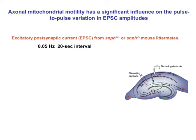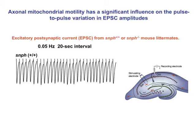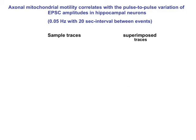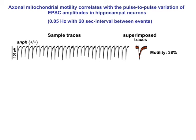We first examined synaptic fluctuations in hippocampal slices. Wild-type mice show pulse-to-pulse variability. Interestingly, the variation was robustly increased in syntaphilin mutant mice, while the mean amplitude EPSC did not change. We confirmed these phenotypes in cultured hippocampal neurons. Wild-type neurons show some degree of pulse-to-pulse variation, in which 38% of axon mitochondria are motile.